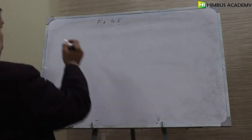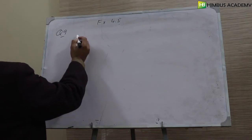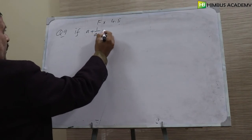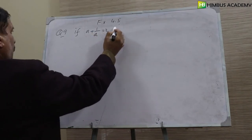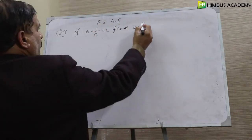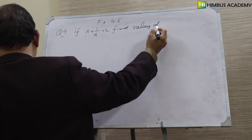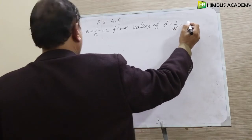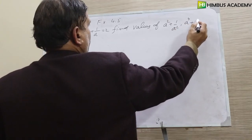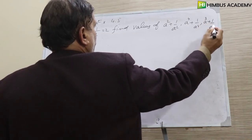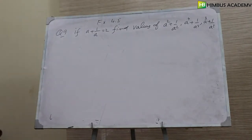Question number 9: if a plus 1 over a is equal to 2, find the values of a squared plus 1 over a squared, a to the power 4 plus 1 over a to the power 4, and a cubed plus 1 over a cubed. We will solve all three answers.